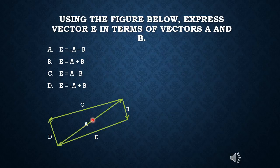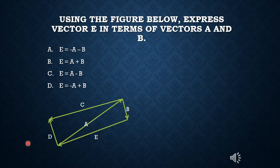So here we have vector E, which goes from here to here, and you want to write an expression that expresses E in terms of vector A — which goes from here to here — and vector B, which goes from here to here.